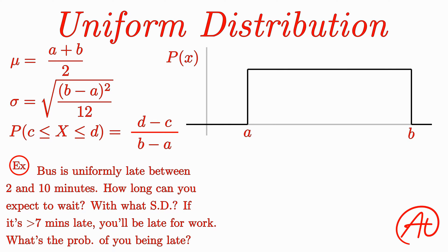Ok, first, let's set up our graph. Instead of a and b, we can replace these values with 2 and 10, because that's the entire domain for the bus's arrival time.